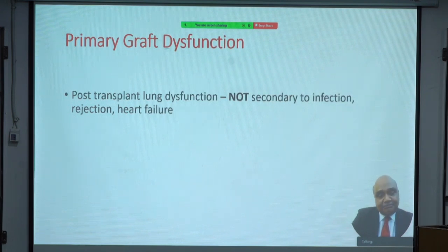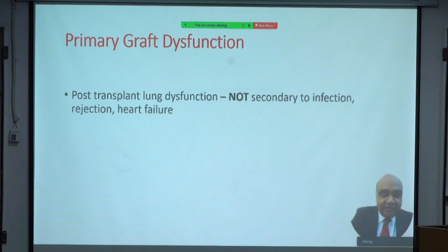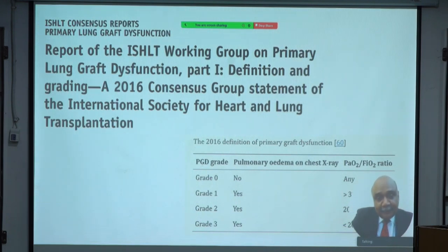Primary graft dysfunction: after transplant, if the lung fails to function well and it is not due to infection, rejection, heart failure, or other known causes, it is called primary graft dysfunction. In 2016, the International Society of Heart and Lung Transplantation published a consensus statement defining and grading primary graft dysfunction from grade 0 to grade 3 — the most severe — where there are changes on the x-ray along with a low PF ratio of less than 200.